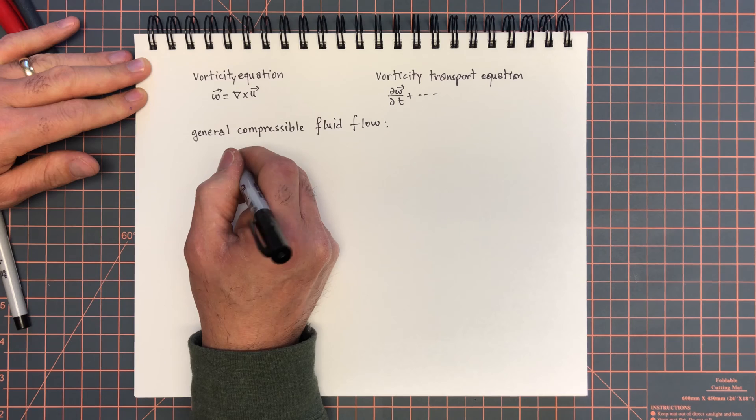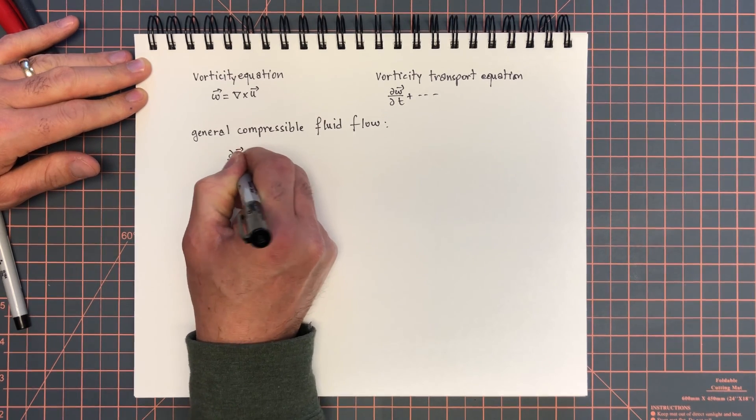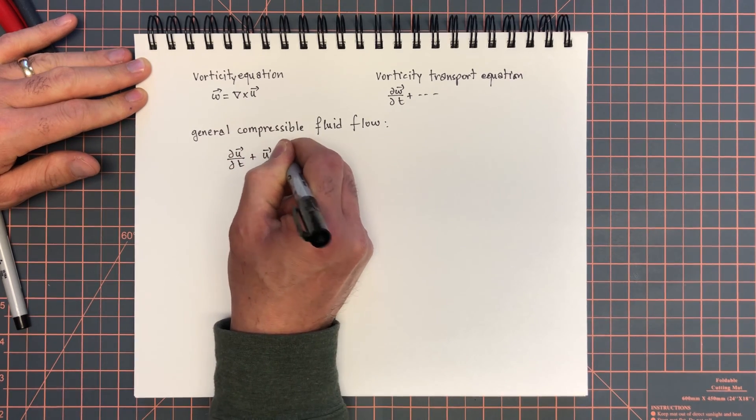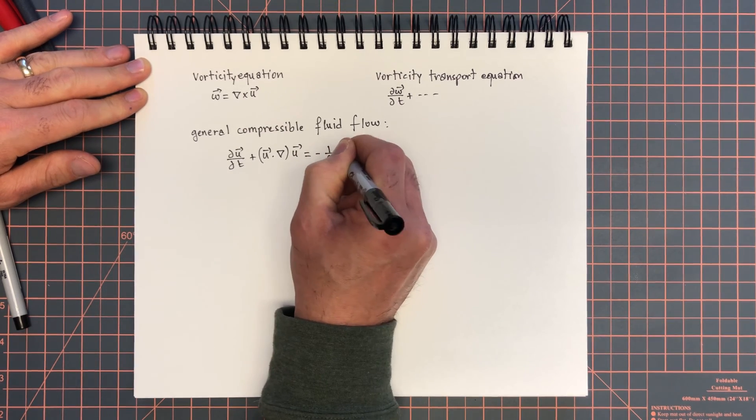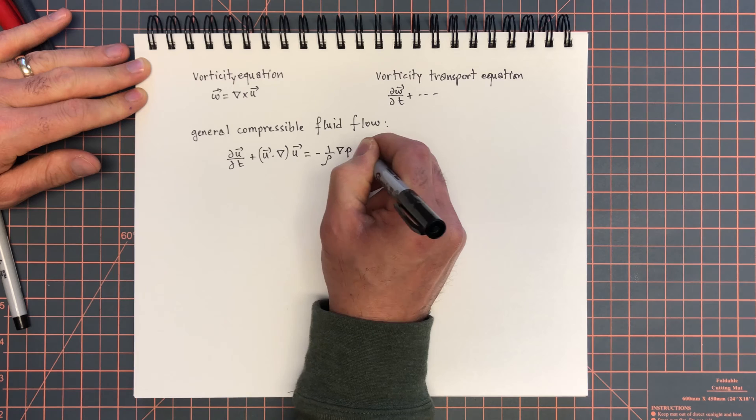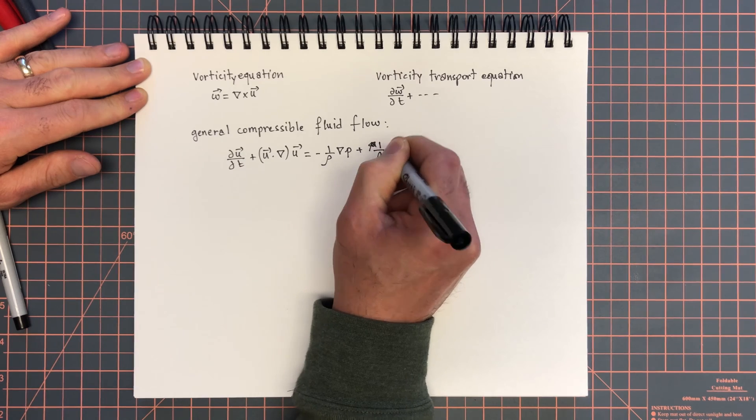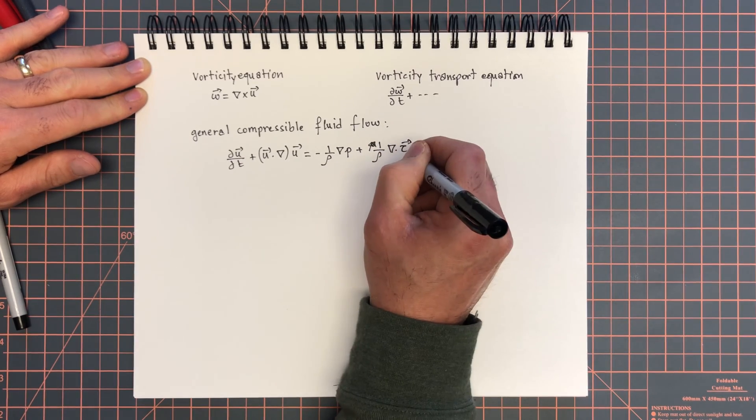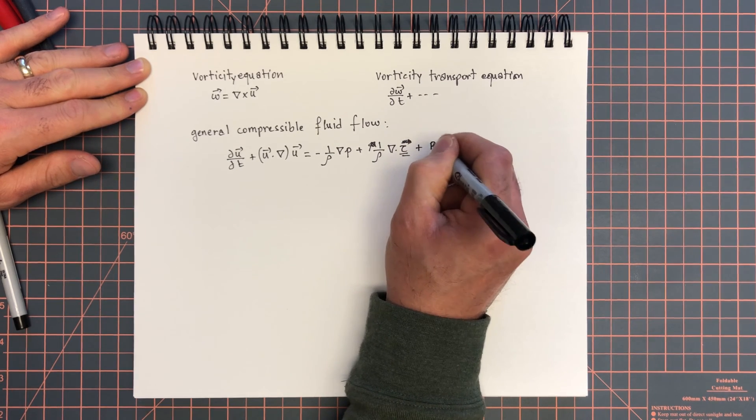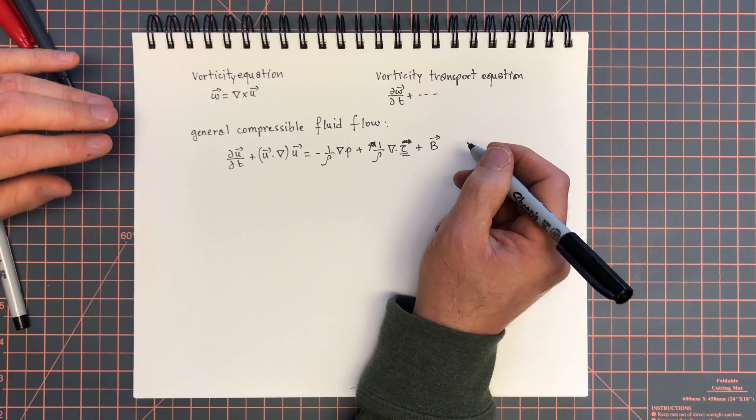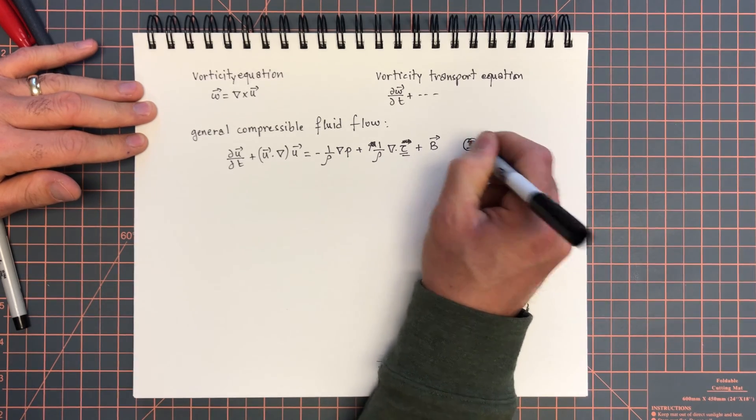With this, we will look at the Navier-Stokes equations that we've derived in weak form. So du by dt plus u dot grad u equals minus 1 over rho grad p plus 1 over rho div tau, this is the tensor, plus some body forces, rho g for example. Now, how do we obtain vorticity? We take the curl of this equation.